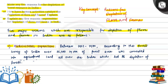The first point is agricultural expansion. Between 1951 to 1980, according to the Forest Survey of India, over 26,200 square kilometers of forest area was converted into agricultural land all over India, which led to the depletion of forest.